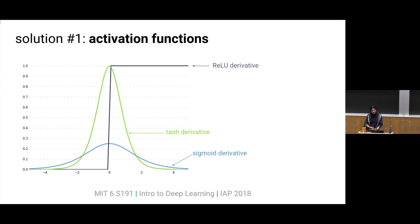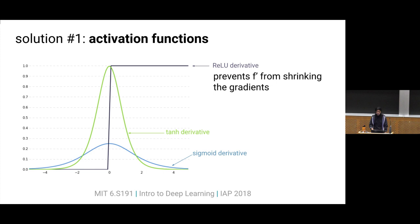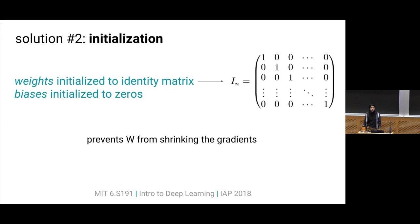The first solution is the choice of activation function. One of the terms making that product really small was the f-prime term — the derivative of whatever activation function we choose. The derivative of hyperbolic tangent and sigmoid is always less than one; for sigmoid, it's always less than 0.25. If instead we choose an activation function like ReLU, it's always one above zero, which at least prevents the f-prime terms from shrinking the gradient. Another solution is weight initialization — if we initialize weights from a normal distribution, they'll be mostly less than one and immediately shrink the gradients. If instead we initialize weights to something like the identity matrix, it prevents the W term from shrinking that product, at least at the beginning.